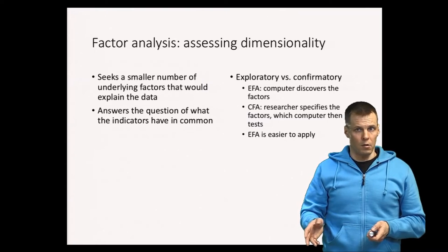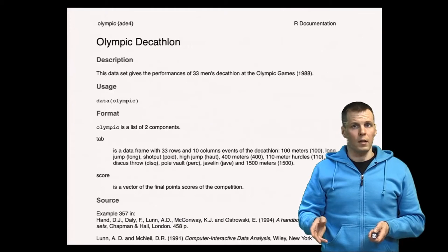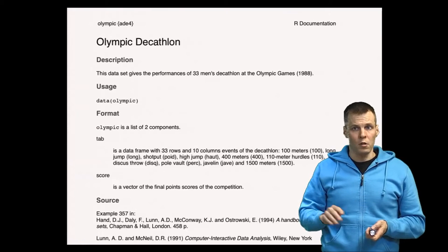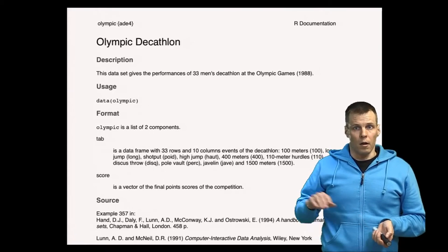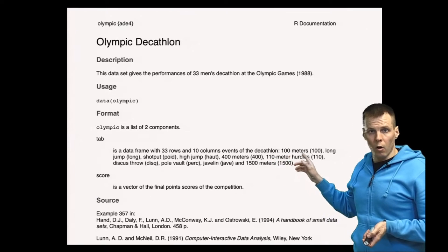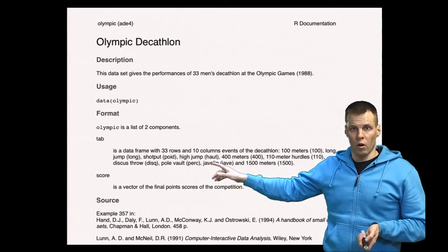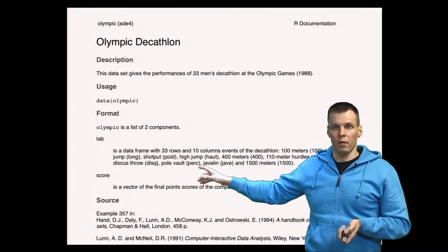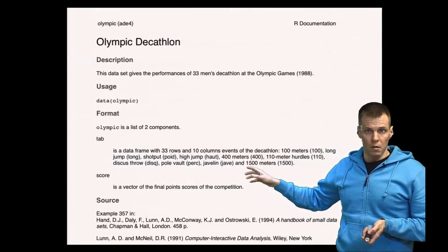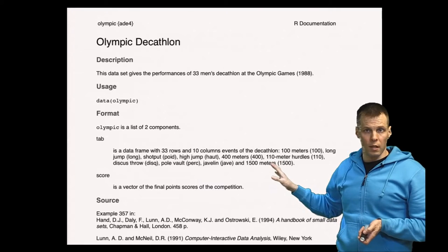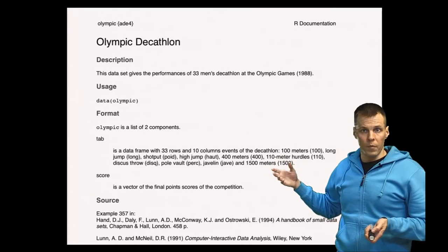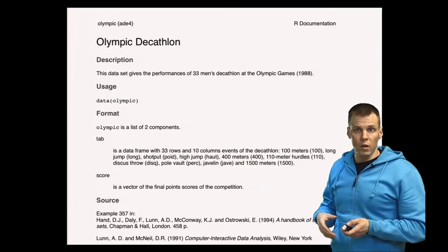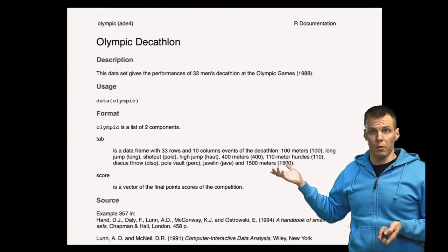I will now demonstrate factor analysis using the exploratory approach. Our data are from the Olympic decathlon, which includes 10 sports: 100 meters run, long jump, shot put, high jump, 400 meters run, 110 meter hurdles, discus throw, pole vault, javelin throw, and 1500 meters run. Athletes are rated based on their performance across all events and the overall ranking is determined by scores, so you have to be a very good overall athlete to compete in the decathlon.